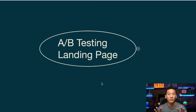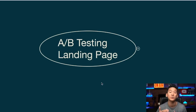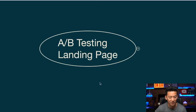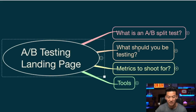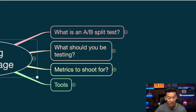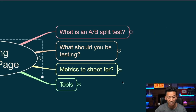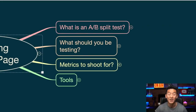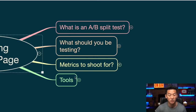Let me break it down for you, and then I will actually show you a demo of exactly how you can do a split test, what you should be testing, and what metrics to aim for. So the first thing with the A-B split test, we're going to break it down into these few categories: what is an A-B split test, what you should be testing, metrics to shoot for, and then we'll talk about the tools.